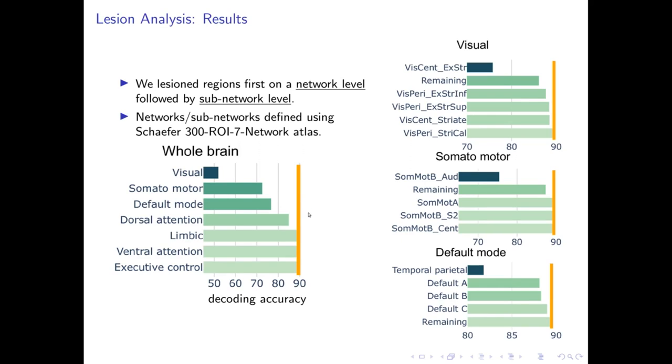Lesioning other networks didn't produce any accuracy deficits. Similarly, within the visual, somatomotor and default networks, we found the importance of sub-networks by lesioning each of them.